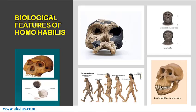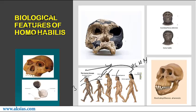Now let us understand the biological features of Homo habilis. The lineage runs from Australopithecus afarensis to Homo habilis, Homo erectus, Homo neanderthalensis, and finally Homo sapiens — modern man. Compared to modern man, Homo habilis was very short in height — simply about 3 feet tall. Because they were smaller in height, Richard Leakey proposed that they should be excluded from the genus Homo.